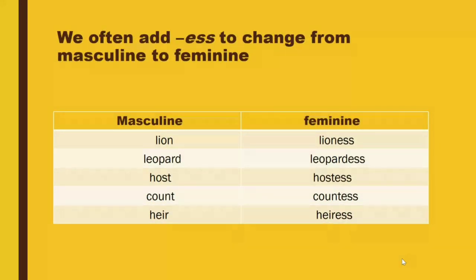We often add -ess to change from masculine to feminine form. Some examples: lion becomes lioness — E-S-S is added to lion. Leopard becomes leopardess. Host becomes hostess. Count becomes countess. Hare becomes hares.